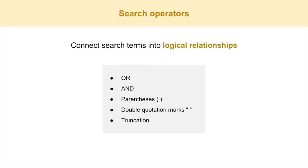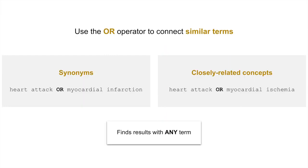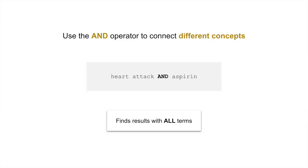The third building block is search operators. They connect search terms into logical relationships and include the OR, AND, parentheses, double quotation marks, and truncation operators. Use the OR operator to connect similar terms, such as synonyms and closely related concepts — the search finds results with any single term, a combination of terms, or all of the terms. Use the AND operator to connect different concepts; the search finds results that contain all of the terms.